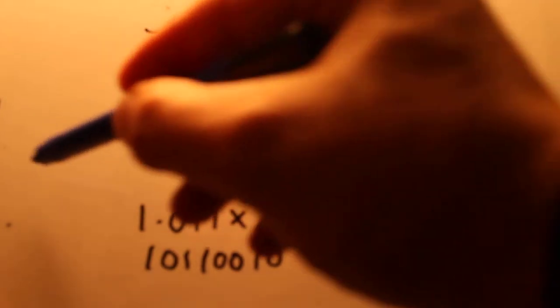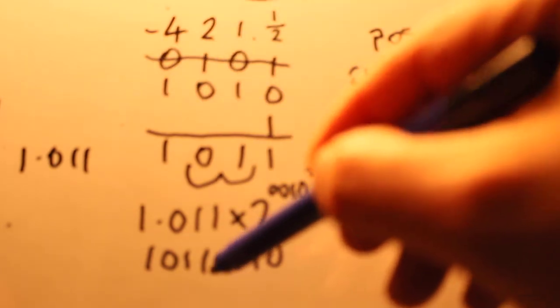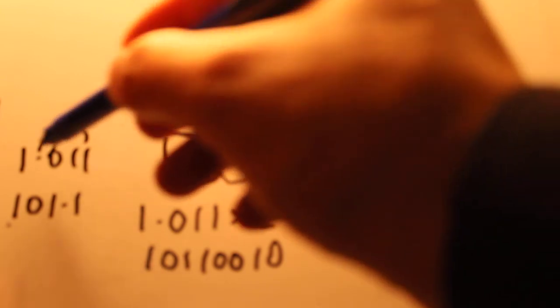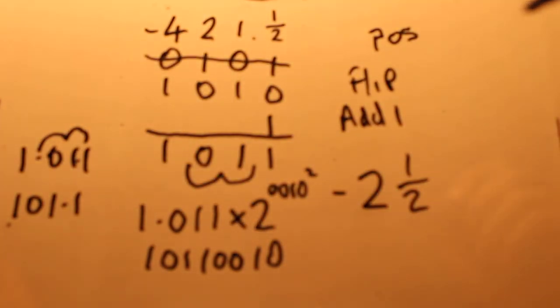So we would float the point two which would give us this number here one zero one point one because we've moved the decimal place from there to there. So what we'd in fact have if we put the powers above these.